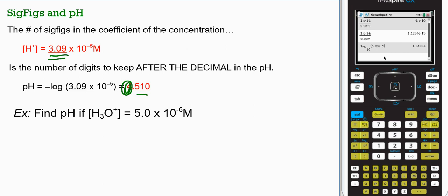What we go by is the number of sig figs we have in our hydrogen ion concentration is the same number of sig figs we keep after the decimal in the pH. So if we had 3 sig figs in our hydrogen ion concentration in this case, then we're going to have 3 sig figs in our pH after the decimal.